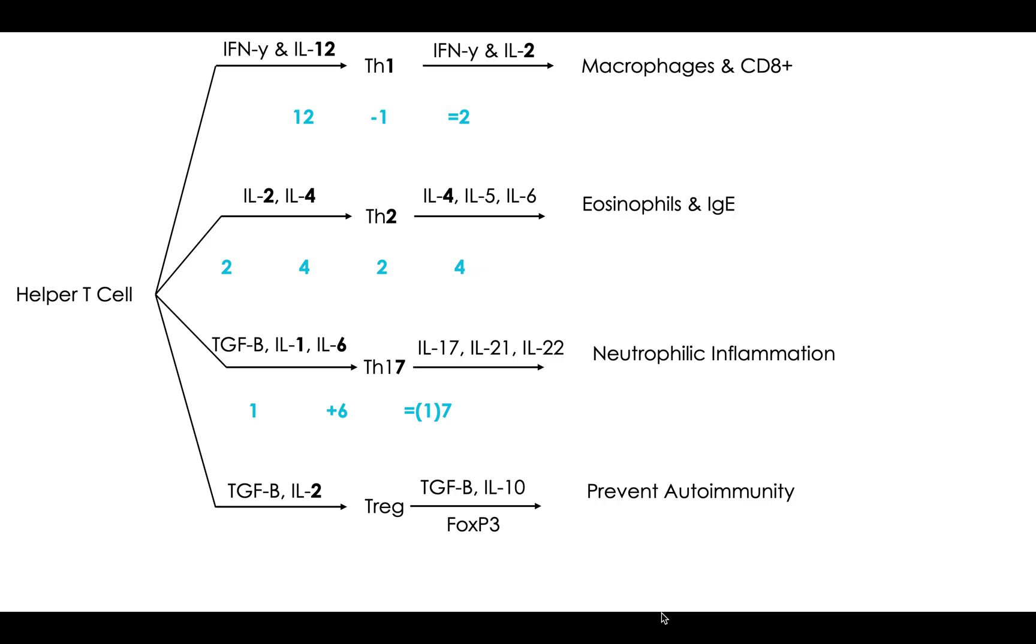Last, we have T-regulatory cells, and this one we're not going to do as much math as think of how would you regulate a T-cell. Well, in order to regulate a T-cell, it would first have to be turned on, right? And so how do we turn on T-cells? Well, IL-2. So IL-2 will turn on T-regulatory cells. And if we're trying to regulate something, we're thinking more of an autoimmune reaction. And if we remember from the interleukin video, IL-10 attenuates your immune system. So T-regulatory is going to turn on IL-10 to prevent autoimmunity in your body.